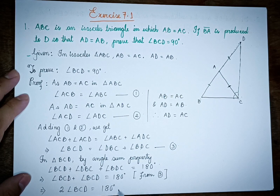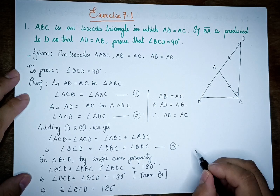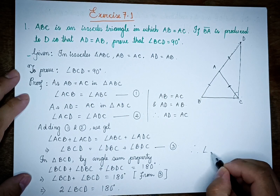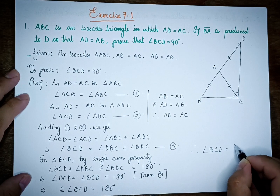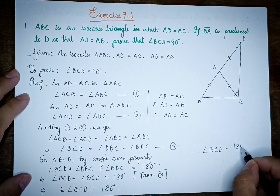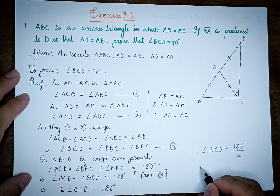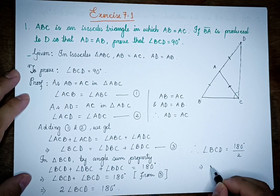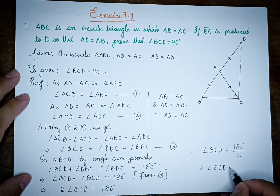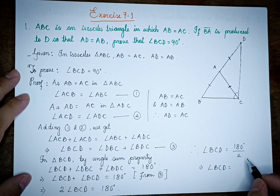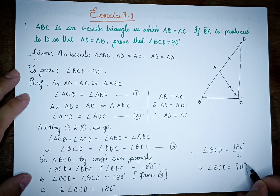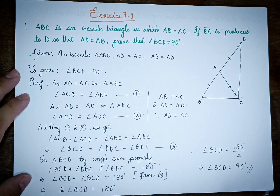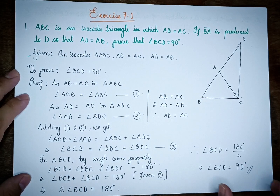This means the angle of BCD is equal to 180 degrees divided by 2, which equals 90 degrees. It's 90 degrees.